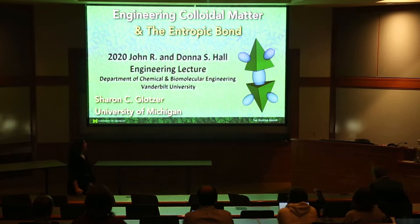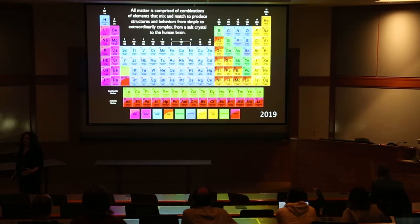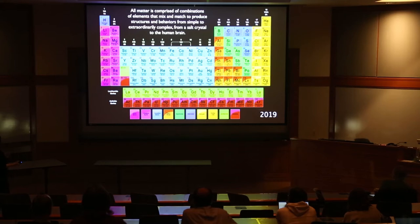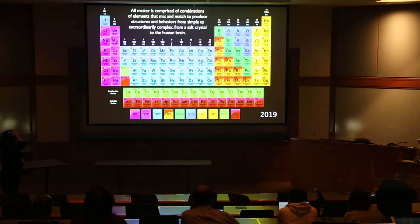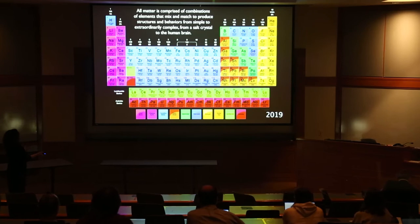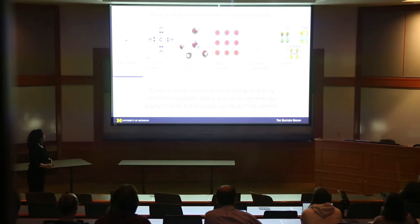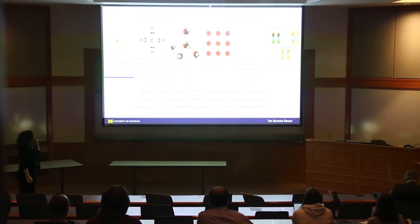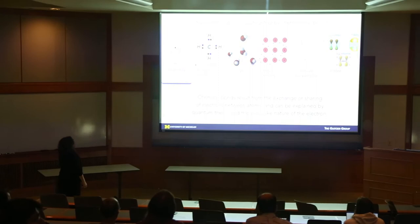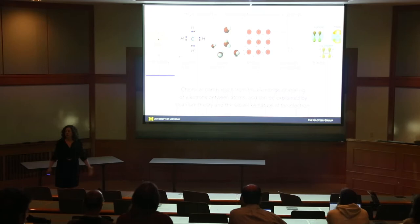Before talking about entropy, let's start with thinking about matter. Generally, matter is comprised of elements and combinations of elements that mix and match in multiple ways to produce structures and behaviors ranging from really simple to extraordinarily complex — from the salt crystal to the human brain. Physical matter is held together by chemical bonds, which result from the exchange or sharing of electrons between atoms. We can explain chemical bonds with quantum theory and the wave-like nature of the electron.